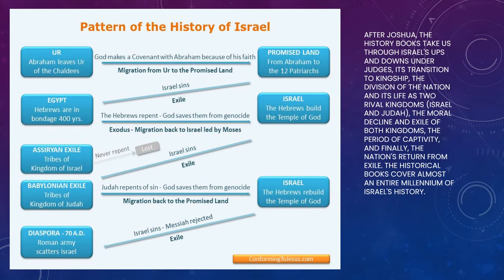This is the part about Old Testament studies that I love — the pattern of Israel's history. Starting from the left side of the chart: Abraham leaves for his new land, and God makes a covenant with Abraham because of his faith. He gets to the promised land and you have the 12 patriarchs. Then Israel sins, and the Hebrews are in bondage for 400 years.